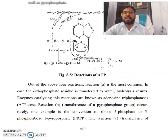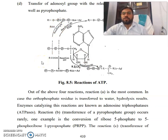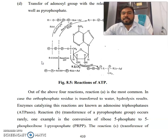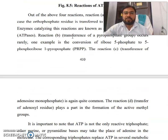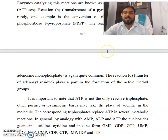Reaction A is the most common. When the orthophosphate residue is transferred to water, hydrolysis results. Enzymes catalyzing this reaction are known as ATPases. Reaction B, transference of a pyrophosphate group, occurs rarely — one example is the conversion of ribose 5-phosphate to 5-phosphoribosyl 1-pyrophosphate (PRPP). Reaction C, transference of adenosine monophosphate, is quite common. Reaction D, transfer of the adenosyl residue, plays a part in the formation of active methylene or active methyl groups.